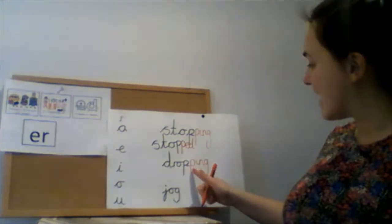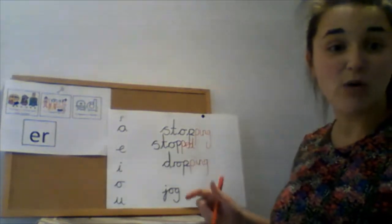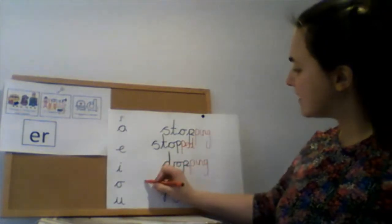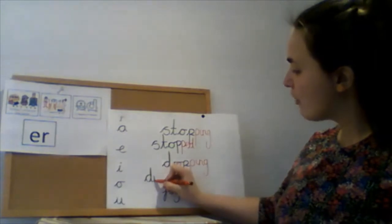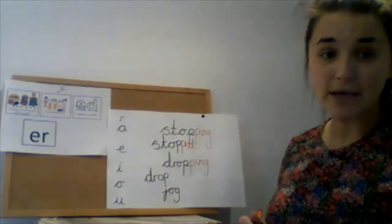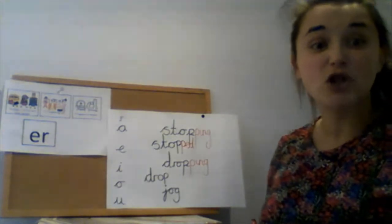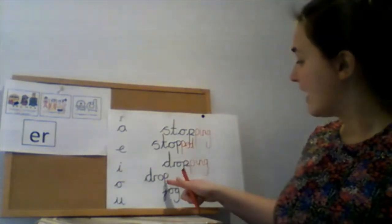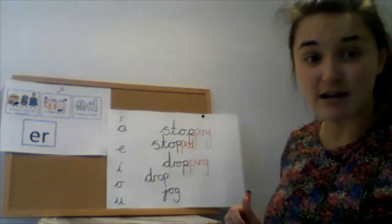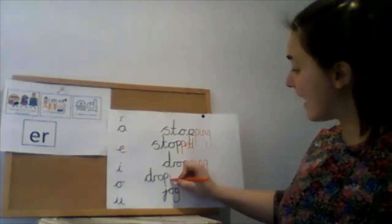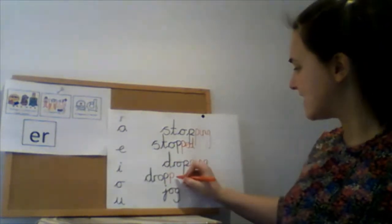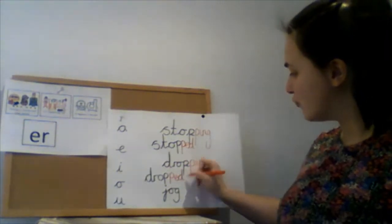So that would be the same for 'dropping' — if I wanted to write the word 'dropped', here's the root word again: drop. If I wanted to turn it into 'dropped', I can hear that short vowel sound right before the last letter, so I need to double the last letter — dropped — and then add -ed. Dropped.